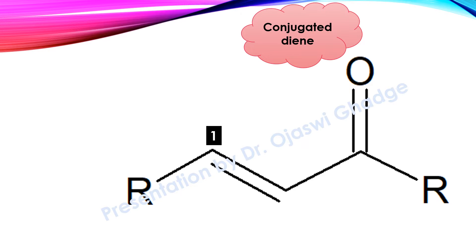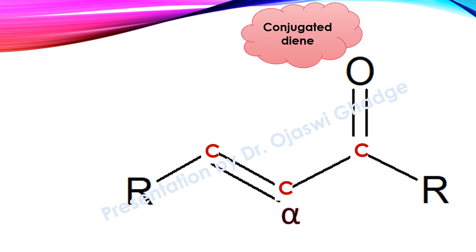Let us start numbering: the first carbon on which the double bond is present, second carbon, third carbon, and the fourth atom is oxygen. Since this is a carbonyl group, we name the carbon as alpha carbon and beta carbon. This system is a little different from the 1,3-butadiene system which we have learned earlier. The colored bonds, the colored carbons, and the oxygen atom — this is our basic moiety.